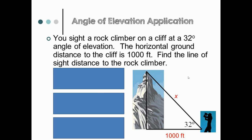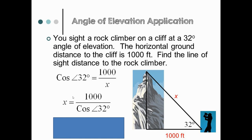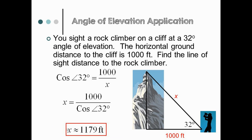First example: you sight a rock climber on a cliff at a 32-degree angle of elevation. The horizontal ground distance is 1,000 feet. Find the line of sight to the rock climber — that's your hypotenuse. I set up cosine of 32 degrees equals 1000 over x. Multiply both sides by x, giving x times cosine of 32 degrees, then divide by cosine of 32 degrees so x is isolated. You can type it all at once, or evaluate cosine 32 degrees then do 1000 divided by it. We get x is about 1,179 feet — that is the line of sight.